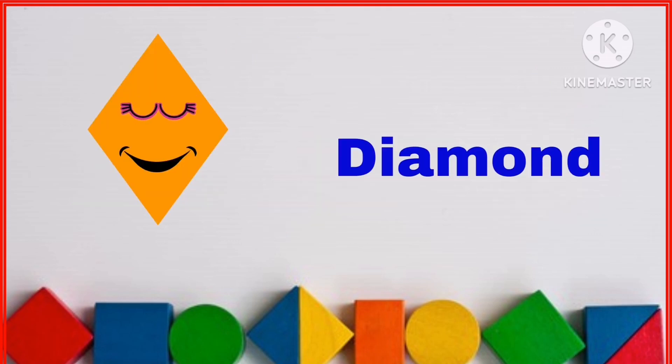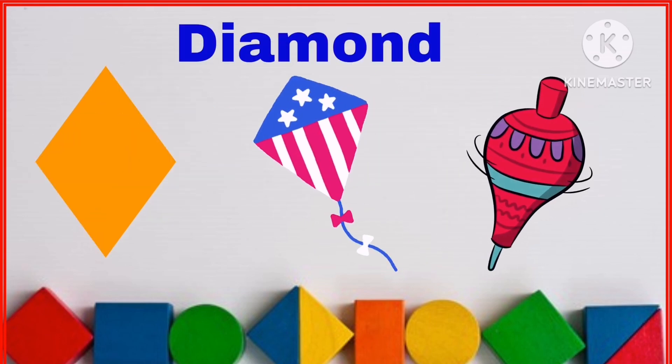I am a diamond. I have four sides and four corners. Example: kite and top.